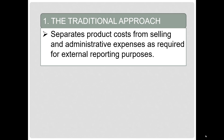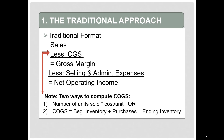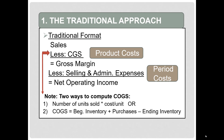The traditional approach separates product costs from period costs, or product costs from selling and administrative expenses, as required for external reporting. This is the income statement format you learned in your first accounting course: sales minus cost of goods sold gives you gross margin, minus selling and administrative expenses gives you income. The cost of goods sold is the product cost for the inventory sold, and selling and administrative expenses are the period costs. So this format emphasizes the product versus period distinction.